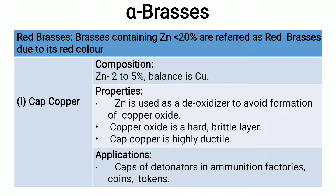Alpha brasses are also called red brasses. Brasses containing zinc less than 20% are referred to as red brasses due to their red color. The first type is cap copper, with a composition of 2 to 5% zinc, balance copper. Zinc is used as a deoxidizer to avoid the formation of copper oxide, which is hard and brittle. Cap copper is highly ductile and is used for caps of detonators in ammunition factories, coins, and tokens.